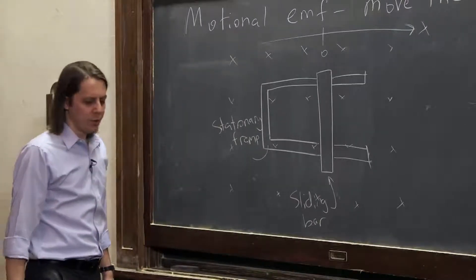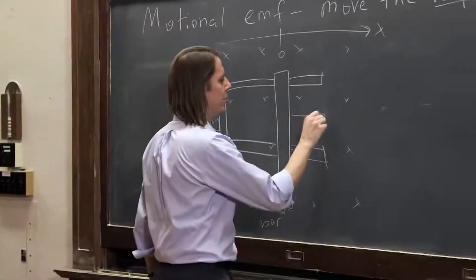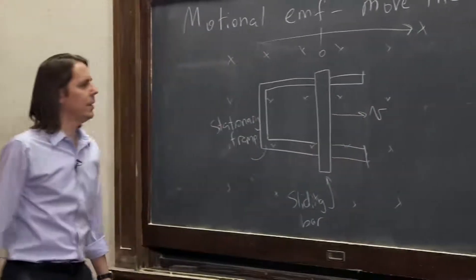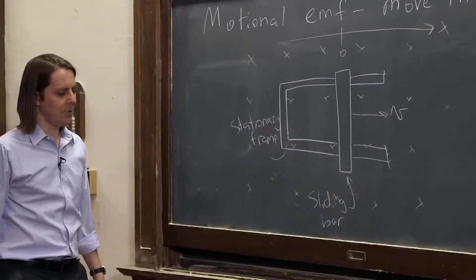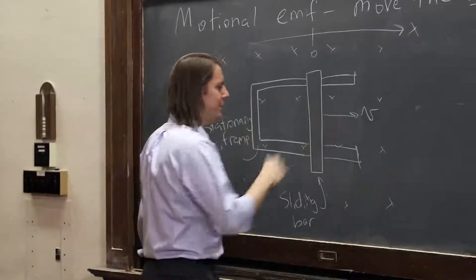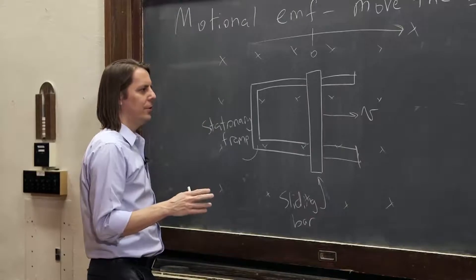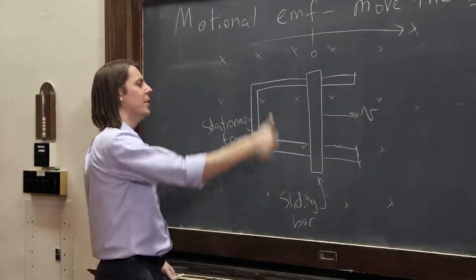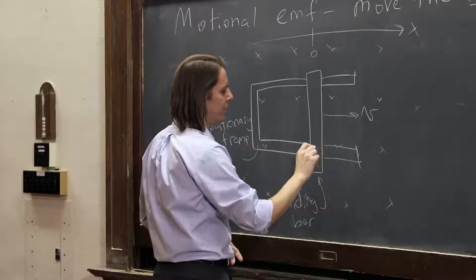Now, what we're going to do is move just this bar. And let's see what happens. Let's think, when this bar moves, its free electrons are going to feel a force. V cross B is up, but they're electrons, so they're going to go down. So these electrons go over here.